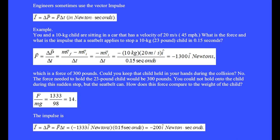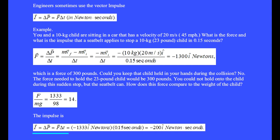The force equals delta-P over delta-t equals (final momentum mv-f minus initial momentum mv-i) divided by the duration. Since the final velocity is zero, the force is minus mv-i divided by delta-t, giving minus 1300 i-hat newtons — a force of 300 pounds. The force needed to hold the 23-pound child would be 300 pounds; you could not hold on, but the seatbelt can. The stopping force is 14 times the weight of the child. The impulse is vector I equals delta-P equals minus 200 i-hat Newton-seconds.